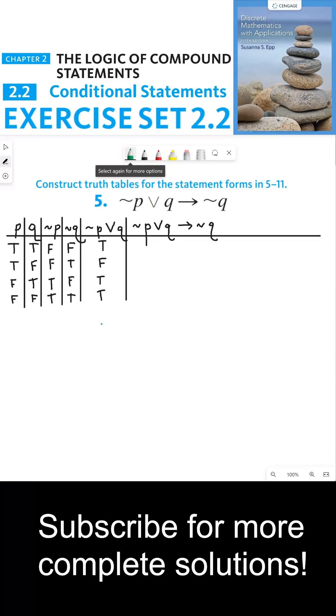We're comparing column 5 with column 4. The idea is that the conditional is pretty much always true except when the if part of the if-then statement form is true and the then part is false. In every other situation, the conditional is true.